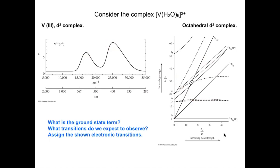So first, what is the ground state term? The diagram on the right gives us this ground state term immediately. We can see that in the free iron, the ground state term is a triplet F, but in a crystal field with ligands around the vanadium, the ground state term will be this triplet T1g.